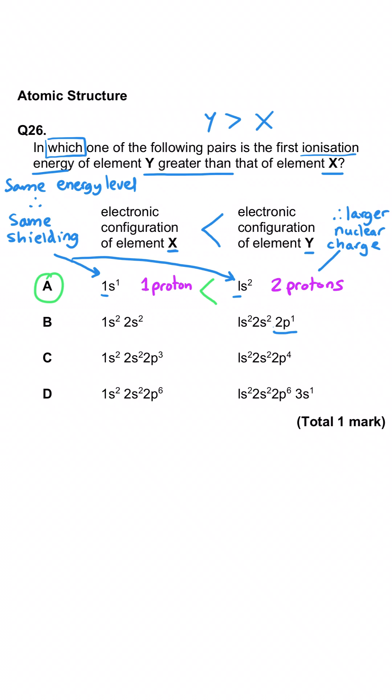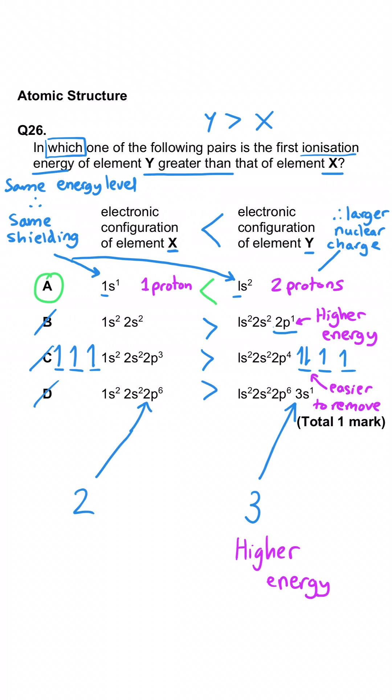B is wrong because a P energy level is higher than S. C is wrong because we've got the pairing up of electrons in the P subshell so those are easier to remove and D is wrong because the 3s energy level is much higher than 2p so therefore easier to remove.